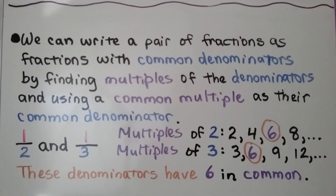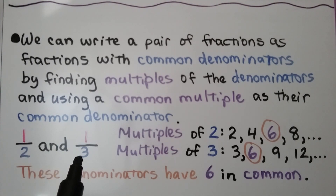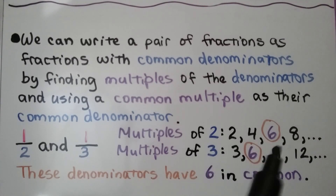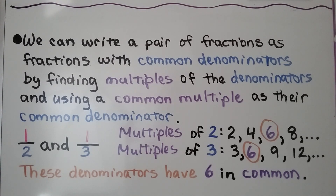We can write a pair of fractions as fractions with common denominators by finding multiples of the denominators and using a common multiple as their common denominator. We have one-half and one-third. We write the multiples of two because that's one denominator, and the multiples of three because that's the other fraction's denominator. The multiples of two are found by skip counting by twos, and the multiples of three by skip counting by threes. We see they have a six in common, so we can use six as the common denominator.